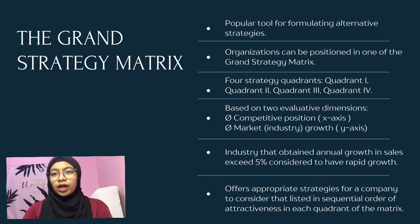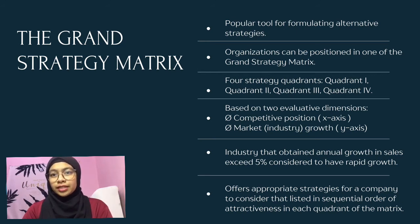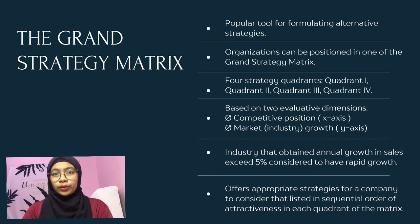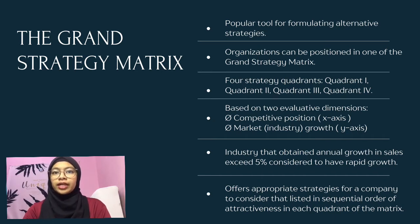The y axis represents market growth, with the top half indicating rapid growth and the lower half indicating slow growth. Any industry whose annual growth in sales exceeds five percent could be considered to have rapid growth. Appropriate strategies for an organization to consider are listed in sequential order of attractiveness.